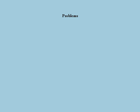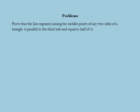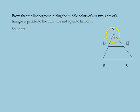Next we are going to discuss certain problems based on the concepts discussed in this lecture. The problem states: prove by the vector method that the line segment joining the midpoints of any two sides of a triangle is parallel to the third side and equal to half of it. For this, let A, B, and C be the vertices of the triangle, and let vector a, vector b, vector c be the position vectors with reference to some arbitrary origin O.